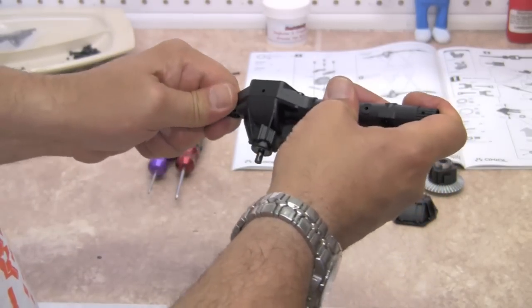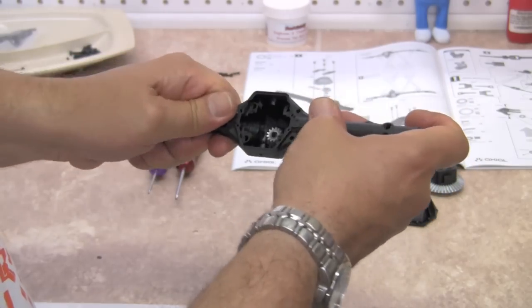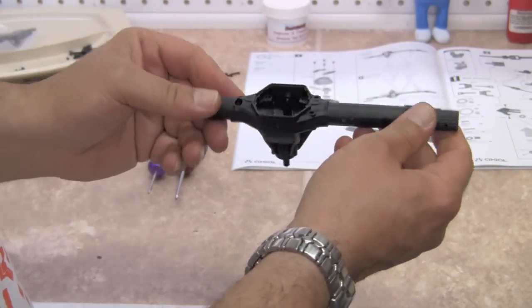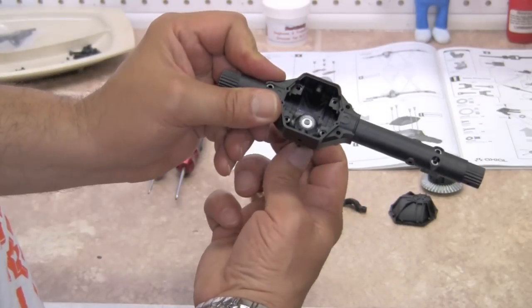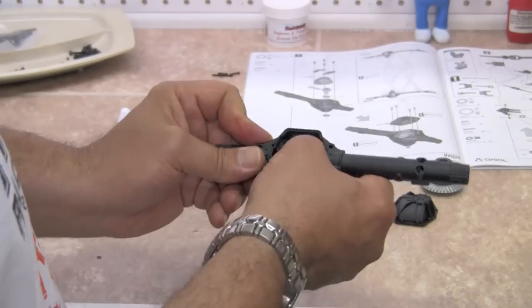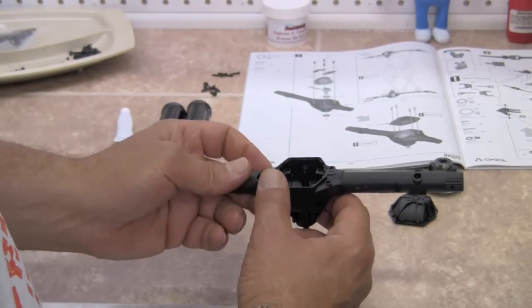These axle housings are quite sturdy. They are a lot beefier than the ones that we used on our honcho build. I really like them. So go ahead and make sure that's in there and it's spinning and that the bearings are fully seated.